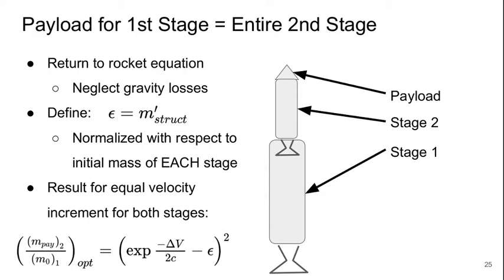So I'm not going to go through and derive this mathematical result in detail. For the payload fractions, there's more detail in the lecture notes from MIT OpenCourseWare. But the way to think about this is that the payload of the first stage is the entire second stage.